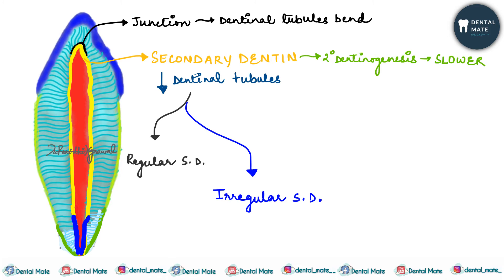In regular secondary dentine, there is a regular arrangement of dentinal tubules in all areas except for the apical part. In the apical part, irregular secondary dentine is present with an irregular arrangement of dentinal tubules.